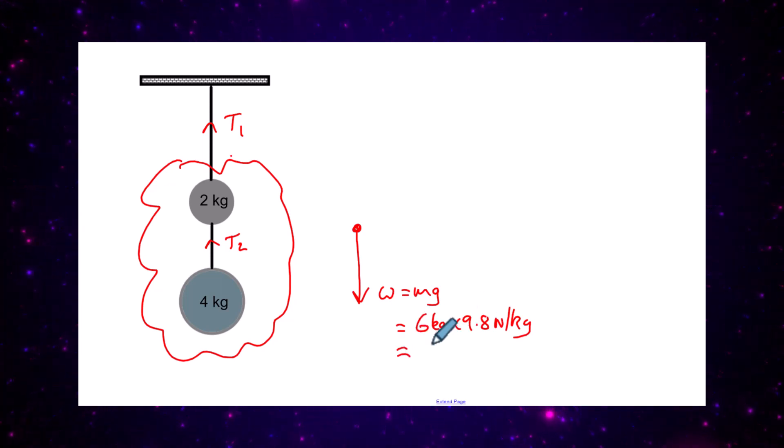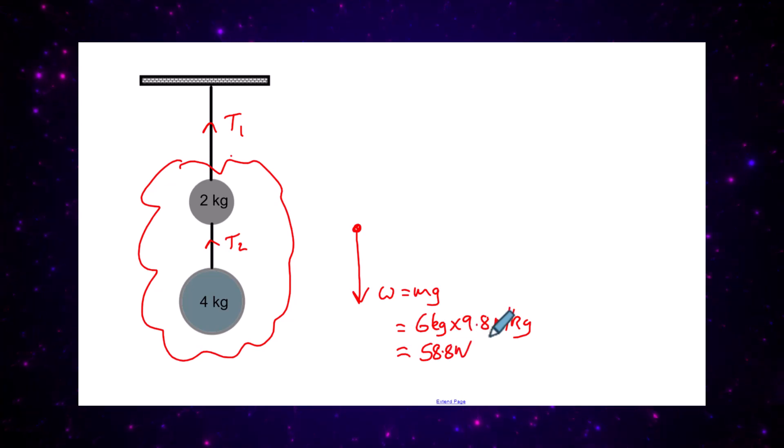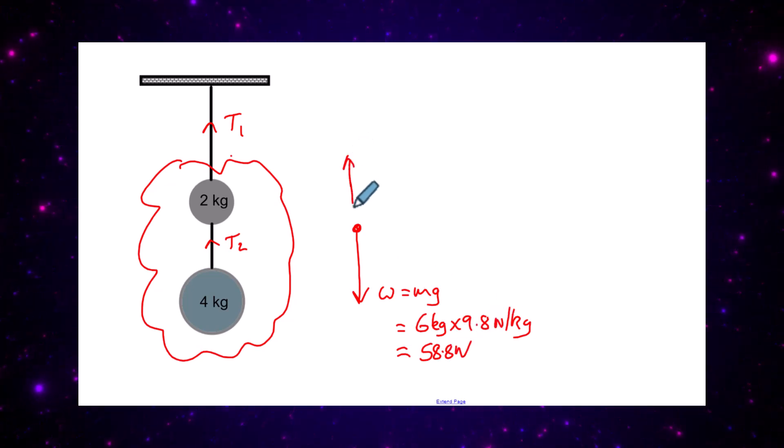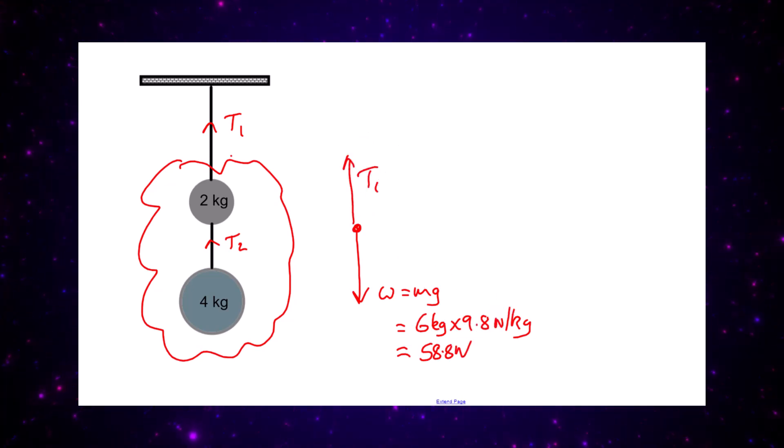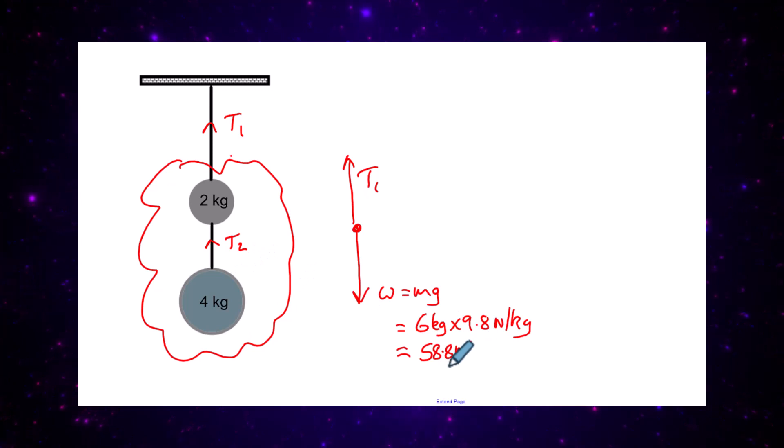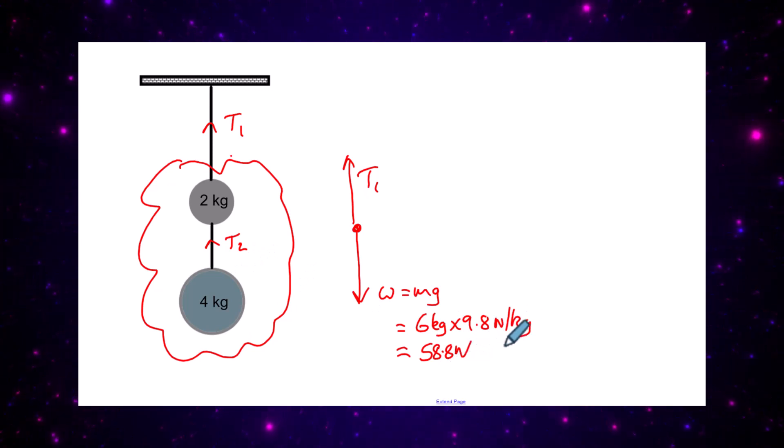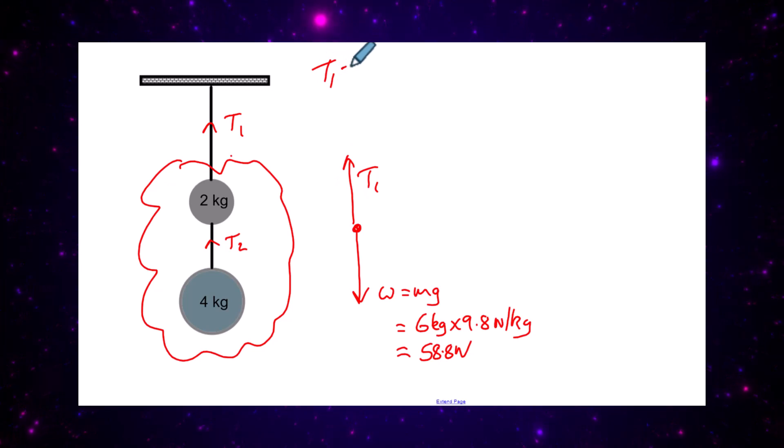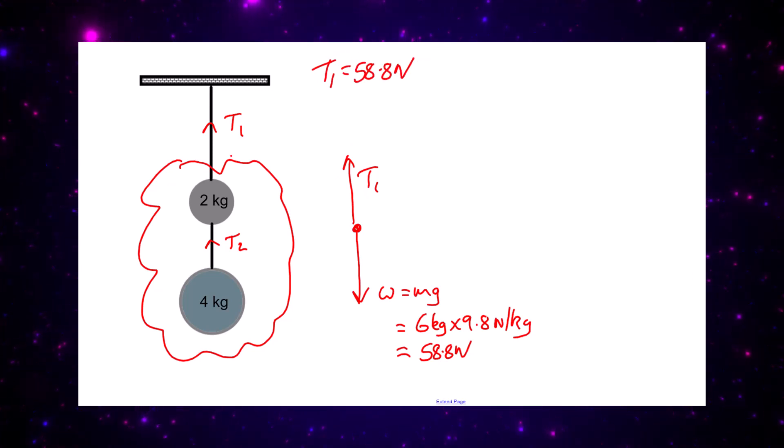Right away we can find what the weight of the combined system is, and it's 58.8 newtons. That must be equal to the tension upward because as far as tension one's concerned, it's supporting six kilograms or a weight of 58.8 newtons. So our first answer is that tension T1 is quite simply equal to 58.8 newtons.